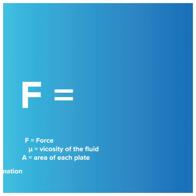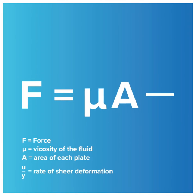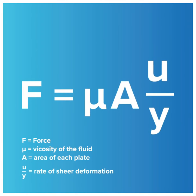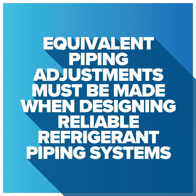The equivalent pipe length calculation takes the increased resistance into account. This is why equivalent piping adjustments must be made when designing reliable refrigerant piping systems.